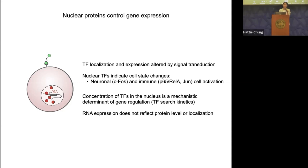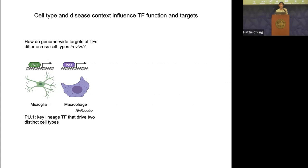From a functional perspective, the concentration of these proteins in the nucleus is a very informative and mechanistic parameter that determines gene regulation. The concentration of transcription factors has an important bearing on the search kinetics of how the protein searches along the genome to bind and regulate genes. Importantly, RNA expression of the encoding genes of these transcription factors is actually poorly correlated to protein levels and does not reflect their localization within the cell.